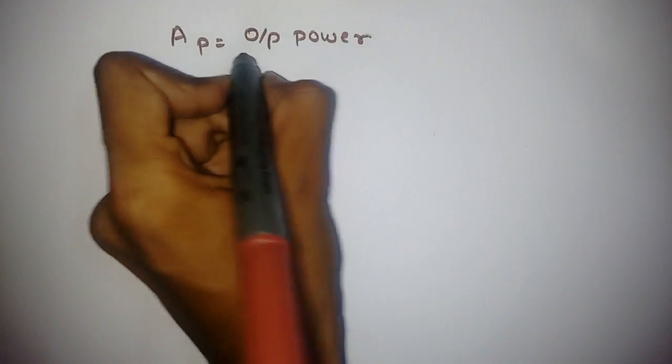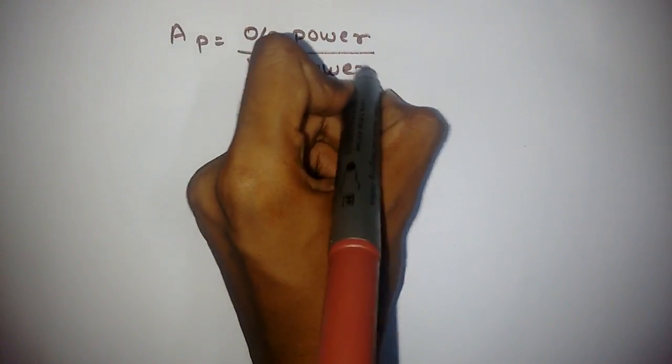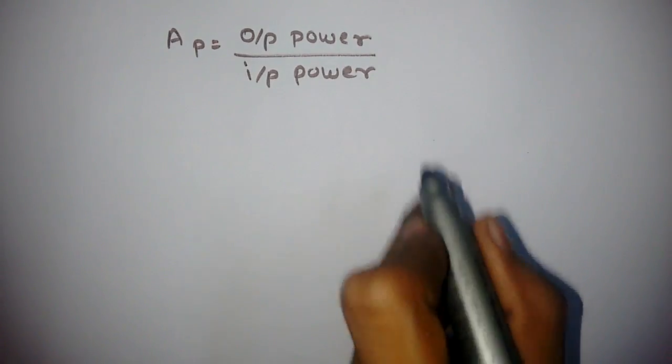Hello everyone, welcome to Electronics Shop. In this video we will learn the relationship between current gain, voltage gain, and power gain in decibels. So let's start. Power gain is output power upon input power.